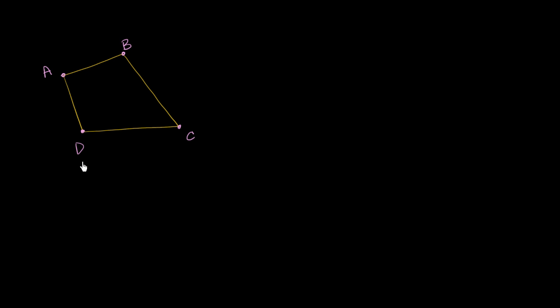An interesting question has come from some of the engineers here at Khan Academy while they were working on the code. Are there any quadrilaterals? I've drawn an arbitrary quadrilateral right over here — quadrilateral A, B, C, D. Is there any quadrilateral that if I were to draw the diagonals, one diagonal B, D and the other diagonal A, C, where the point of intersection of these two diagonals is point E?